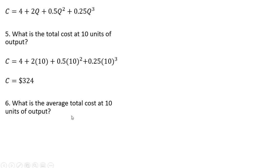What is the average total cost at 10 units of output? The cost per unit is the total cost divided by the quantity, and in this case we get $32.40.